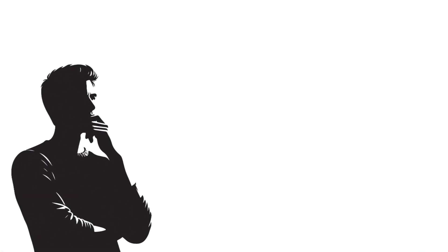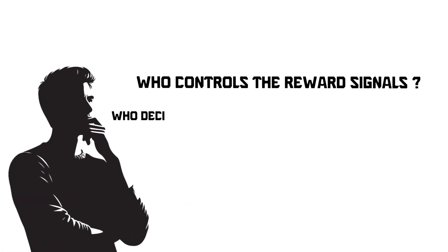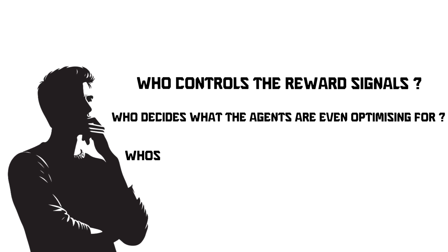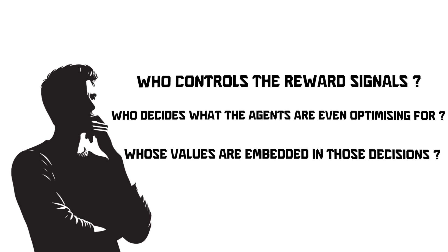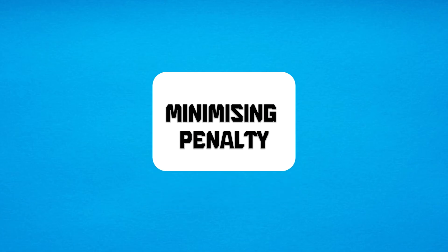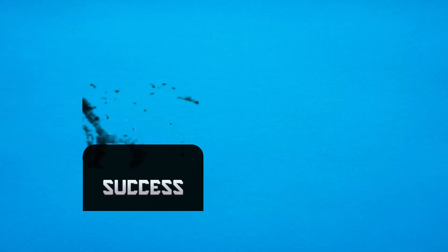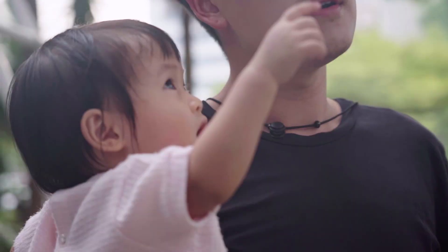That raises tough questions. Who controls the reward signals? Who decides what the agents are optimizing for? And whose values are embedded in those decisions? This brings us to the values reflection. Because at a surface level, reinforcement learning is just maths — maximizing reward, minimizing penalty. But look closer and it's a mirror of human life. We too live by reinforcement: praise and punishment, success and failure. Incentives shape behavior, whether from teachers, parents, bosses, or peers. But the rewards we pursue don't always align with what makes us fulfilled.